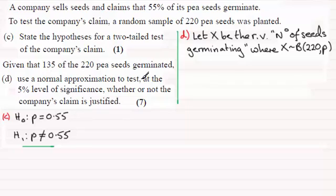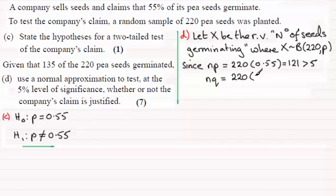Now it says use a normal approximation to this particular distribution. And we know that we can use a normal approximation. We don't have to justify it here, but I'll just show you anyway, as a reminder. And that is that the number of trials times the proportion P has to be greater than 5, and the same with N times Q, the probability of failure, that has to be greater than 5. So if you work out NP, that is 220 times P, which if we assume that the null hypothesis is 0.55, then that comes to 121, and that's greater than 5. We also have to test NQ, and NQ would be 220 times 0.45, and that comes out to 99, which is greater than 5.